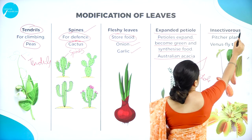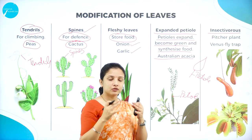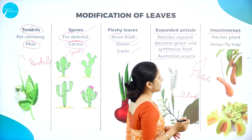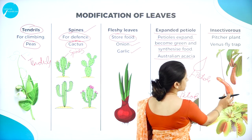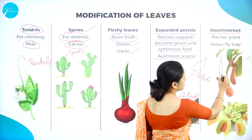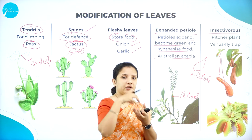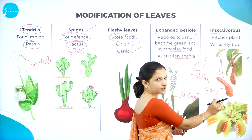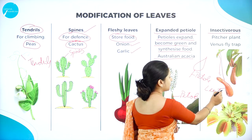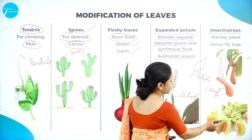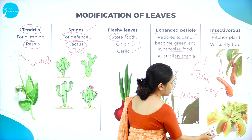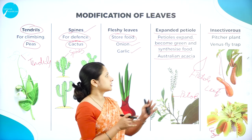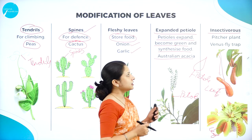Some plants have insectivorous leaves. Those leaves get modified in such a way that they help in trapping insects. For example, in pitcher plant the leaf gets modified into a pitcher which helps in trapping insects. Similarly in Venus flytrap, the leaf is modified to act like a flap — whenever an insect comes in, it closes off and feeds on the insect. So these are some of the modifications in the leaf.